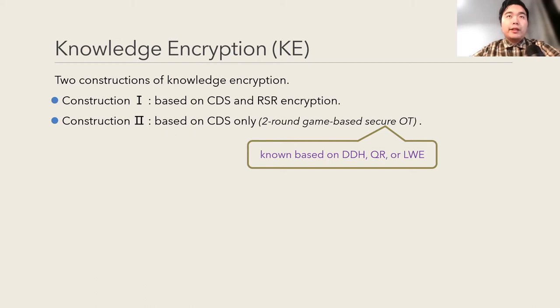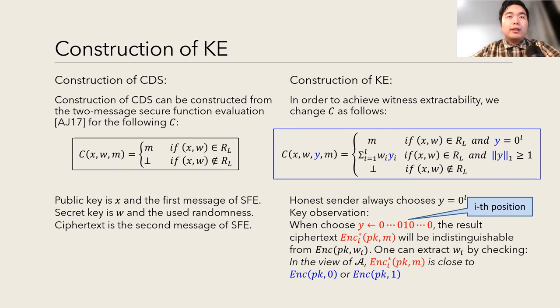Here, we only give a high-level idea about the second construction. Recall that a CDS can be constructed from two-message secure function evaluation for the circuit shown on the slides. We embed a simple decoding mechanism in this circuit so that a specially generated ciphertext will be indistinguishable from the ciphertext of some position of the witness. Therefore, one can extract the witness by observing the view of the adversary.